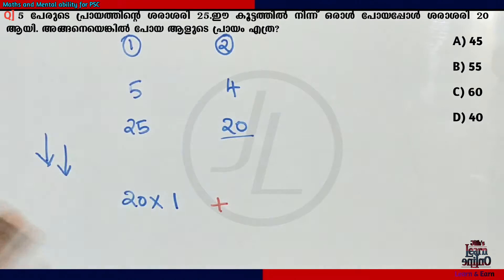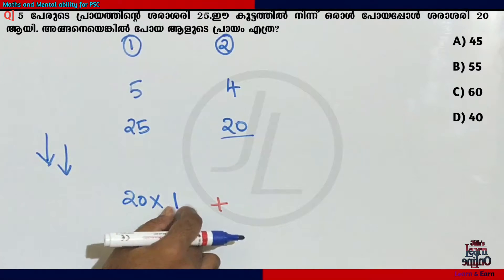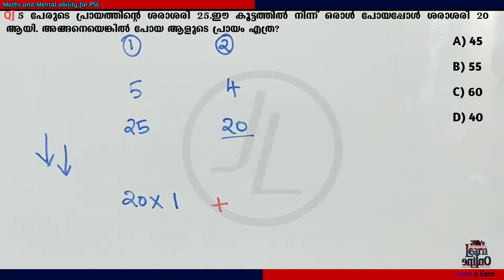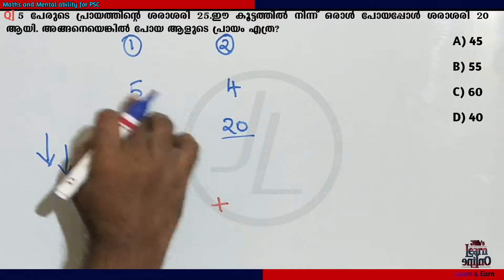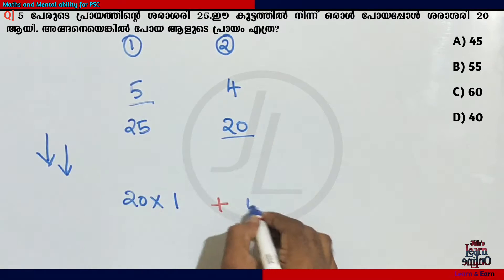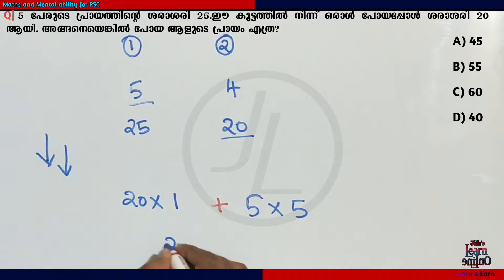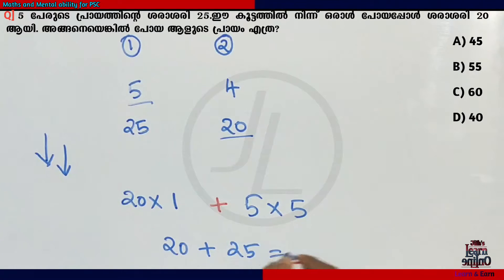Because one day you will learn this number. This number is 1. If you are going to learn a trick, you will learn a step. 20 into this number is 1. Now we have 5. 5 into this number is 5. 20 plus 25 equals 45. That means the number is 1.